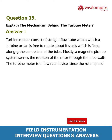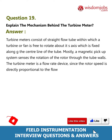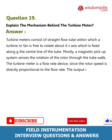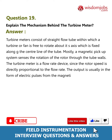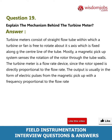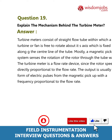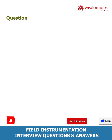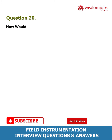The turbine meter is a flow rate device since the rotor speed is directly proportional to the flow rate. The output is usually in the form of electric pulses from the magnetic pickup, with the frequency proportional to the flow rate.